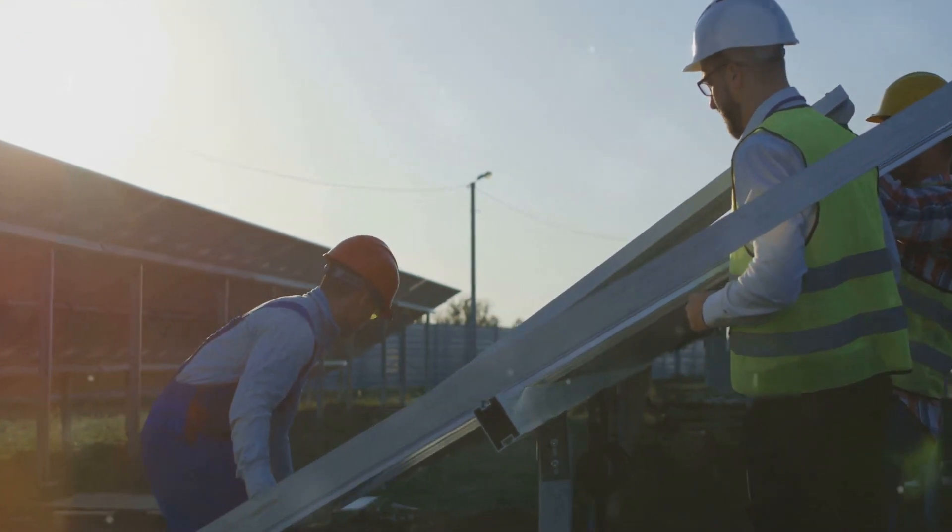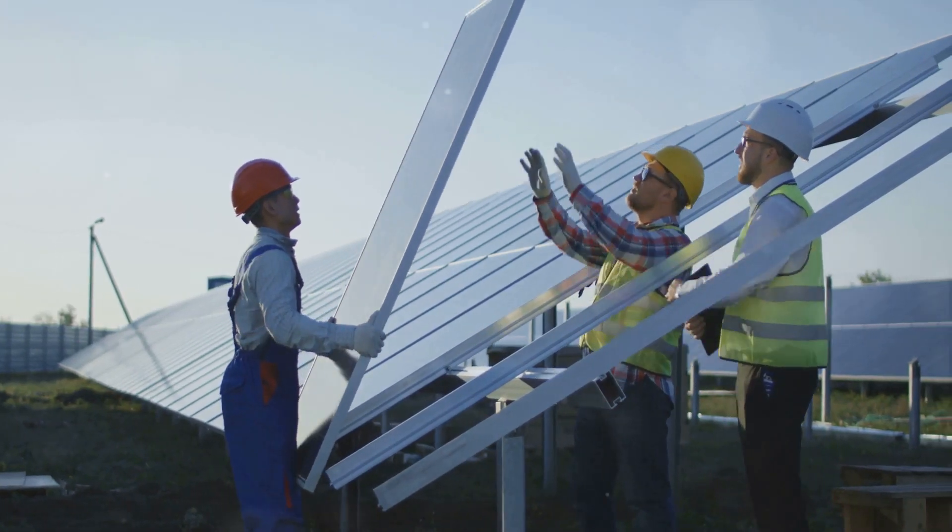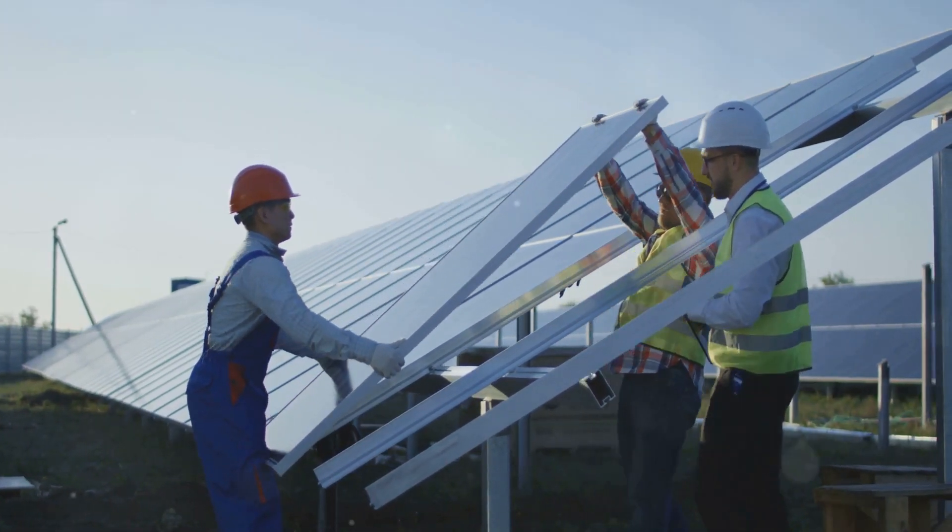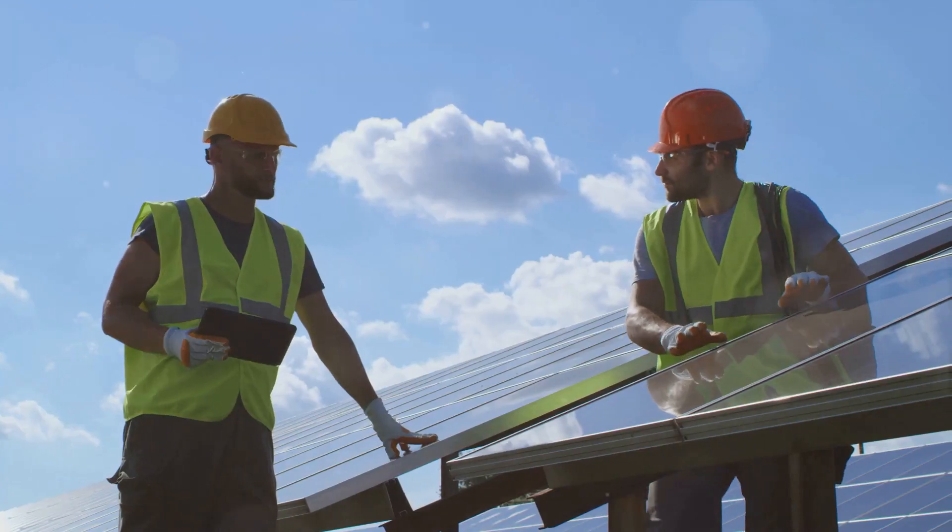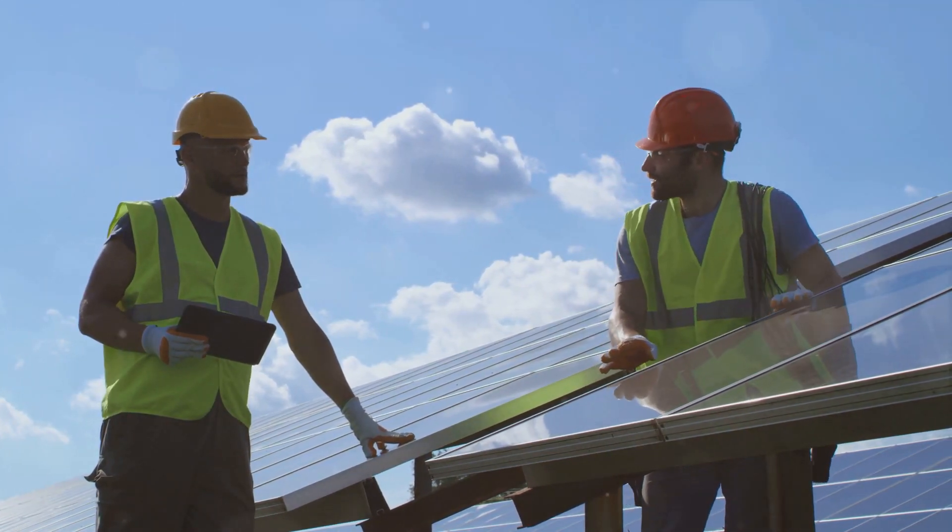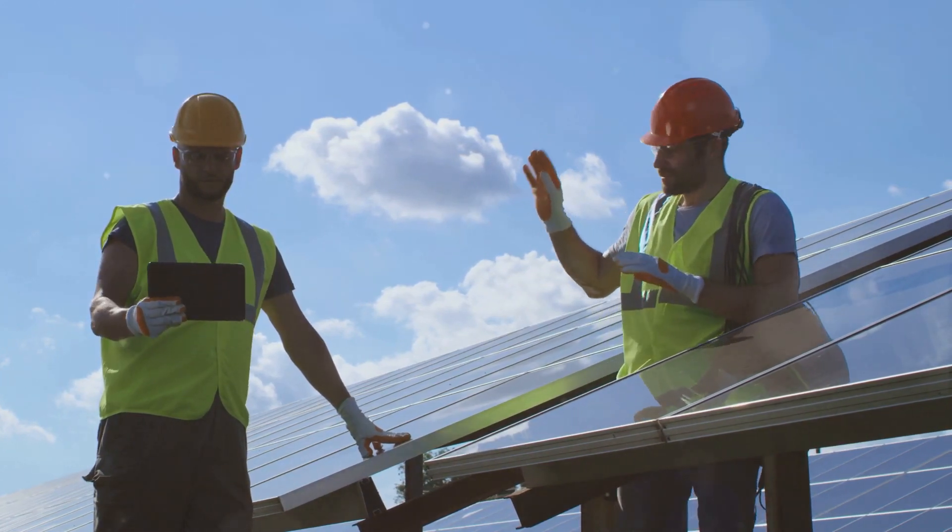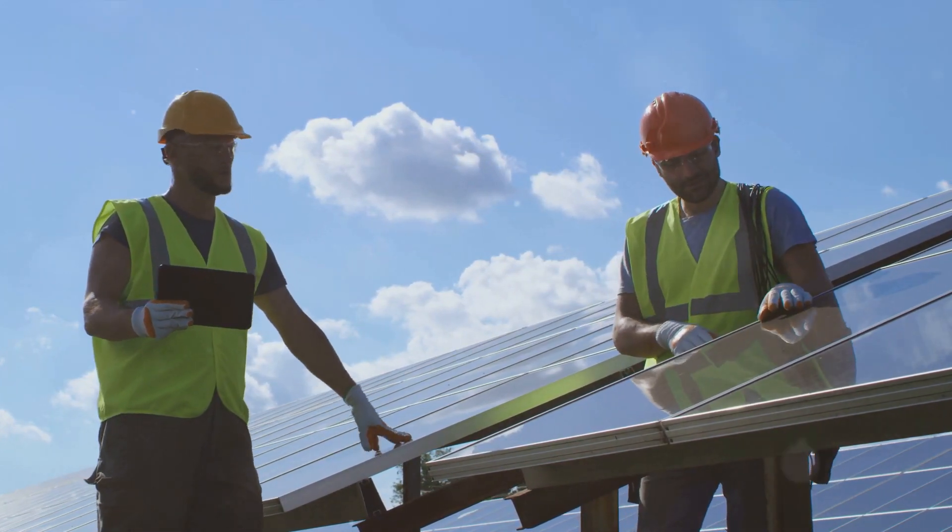Once the cells are complete, they are assembled into solar panels. The cells are laid out, connected and sealed between layers of protective material. These panels are then tested for efficiency and durability, ensuring that they are ready to harness the power of the sun. Every step in this process requires precision, scientific knowledge and technological innovation.